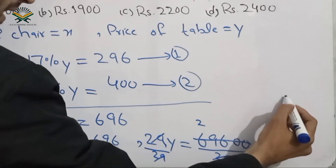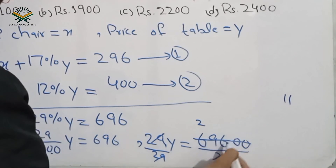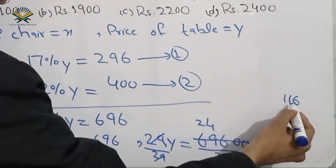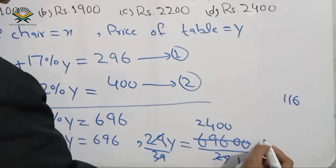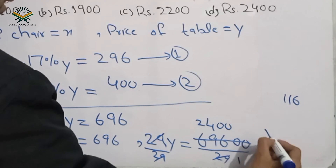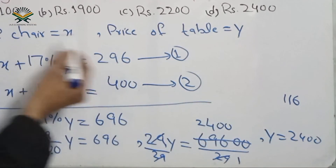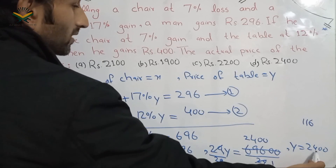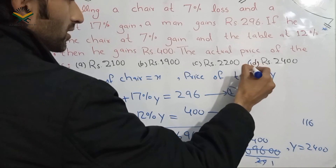Solving the calculation: 29y equals 69600. Dividing both sides by 29, y equals 2400. So the price of the table is Rs. 2400. Option D is the correct answer.